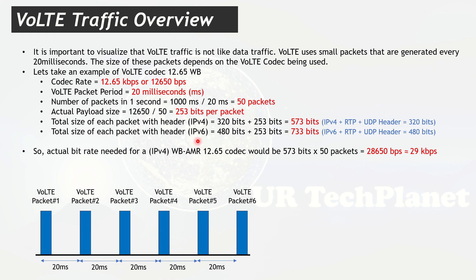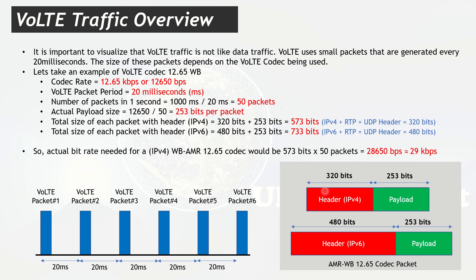For IPv6, the header size is larger — around 480 bits — giving a total packet size of 480 + 253 = 733 bits. So in IPv4 the header is about 320 bits with a 253-bit payload, while in IPv6 the header is much bigger but the payload size remains the same.